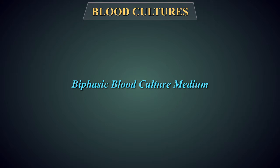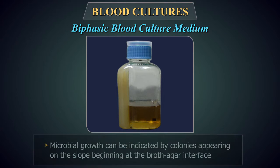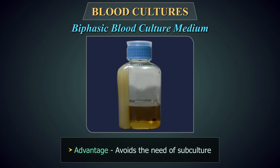Diphasic Blood Culture Medium: A diphasic or Castaneda blood culture medium combines an agar slope with a broth medium. The blood broth is allowed to run over the agar slope at regular intervals by tipping the bottle. Microbial growth is indicated by colonies appearing on the slope beginning at the broth-agar interface. The advantage of this method is that it avoids the need for subculture, hence reducing the risk of contamination.